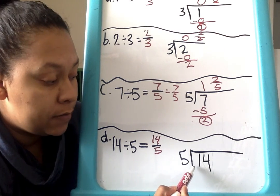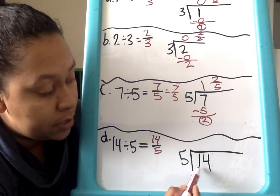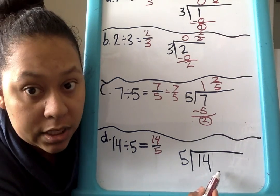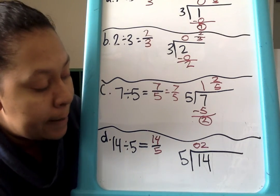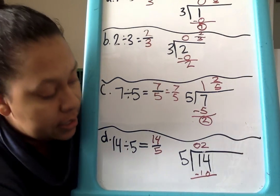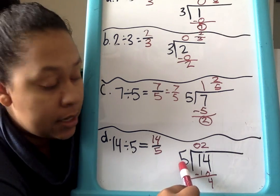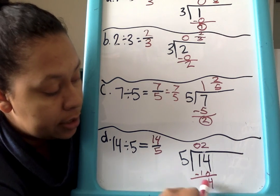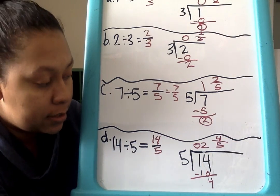Now let's connect our fraction into our division problem. 5 can't go into 1, so let's use 14. 5 can go into 14 two times, so that would be 2. If we did 5 two times, we already shared out 10 pieces. So 14 minus 10 gives us 4 left over. Now we have 4 pieces to divide into 5 friends. Since 4 is less than the divisor, we leave that as our leftover fraction — 4 pieces divided into fifths. So the answer is 2 and 4 fifths.